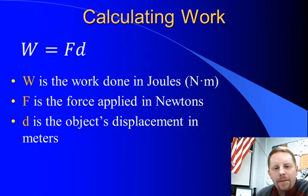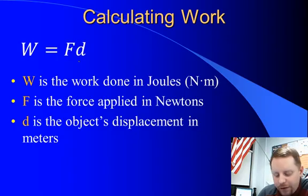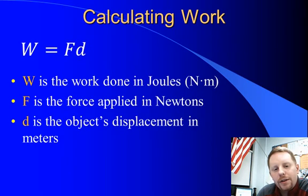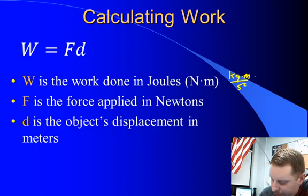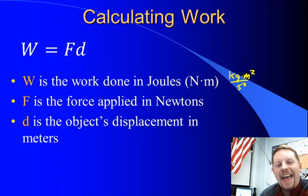So calculating work. It's a fairly straightforward formula. Work is equal to force times displacement. W, the work done in joules, is also known as a Newton times a meter. Now you'll recall that a Newton is a kilogram meter per second squared times a meter. So a joule is a kilogram meter squared per second squared. A joule is a unit of energy and of work.